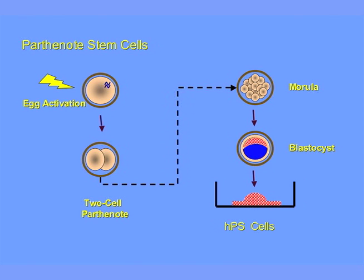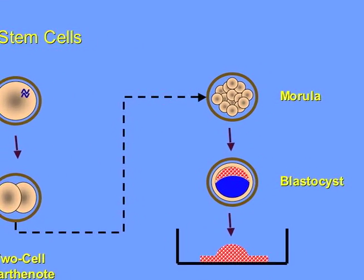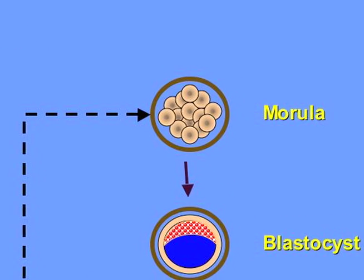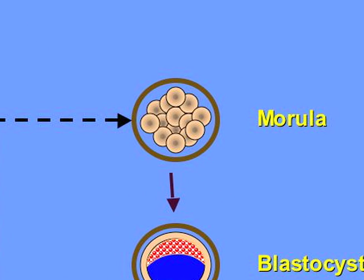A parthenote replicates the egg's genes in exactly the same manner as a fertilized embryo replicates embryo genes. It looks the same as a fertilized egg. It goes to the morula stage, which is approximately 16 to 32 cells.